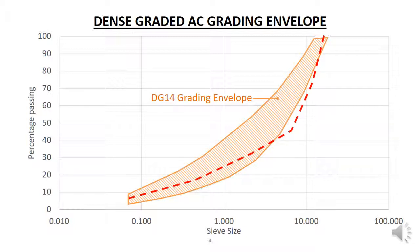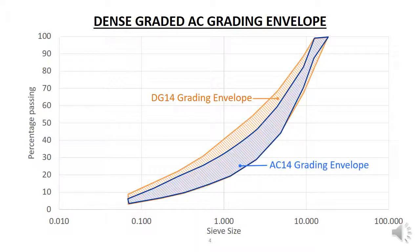Let's look at the AC14 grading envelope. Both mixes have the same maximum and minimum aggregate size, which is 14 mm. So how do they differ? The blue-green area is the AC14 grading envelope. You can see that the AC14 has a narrower range of acceptable proportions for all sizes, especially for the coarser sizes. This is because this mix needs to take higher loadings, and so a mix closer to the optimum proportions is required.